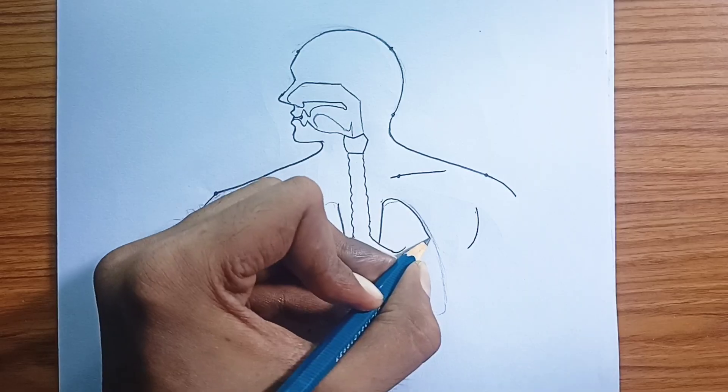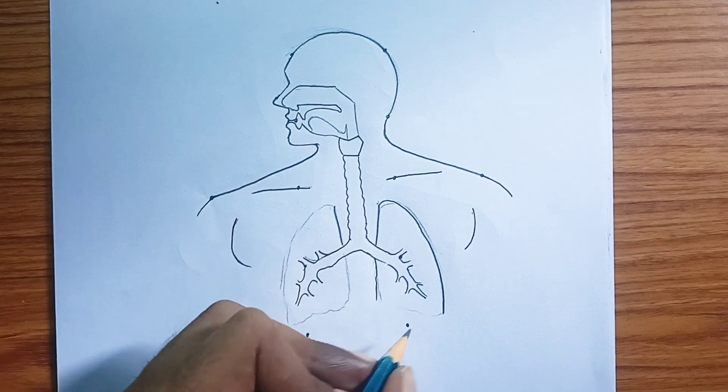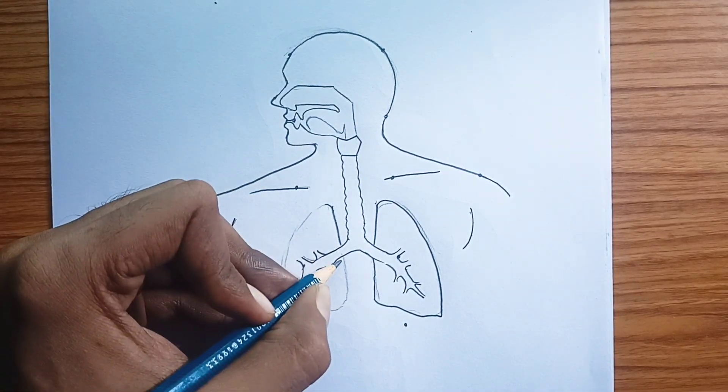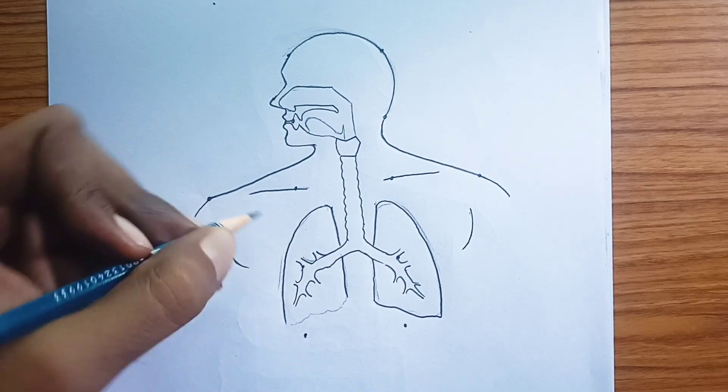The trachea or windpipe is a sturdy tube reinforced by rings of cartilage to keep it open. It's lined with cilia, tiny hair-like structures that sweep mucus and trapped particles upward and out of the respiratory system.